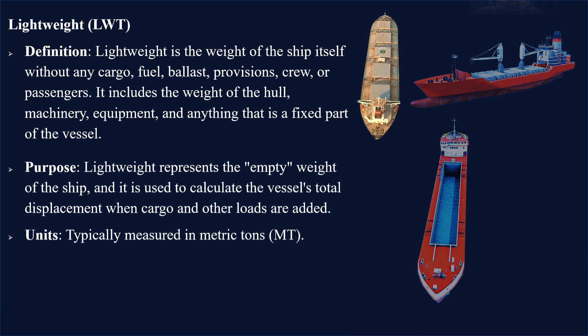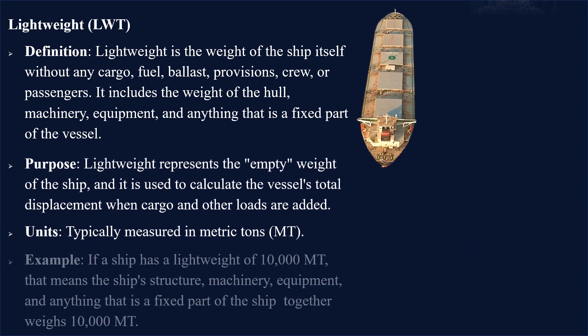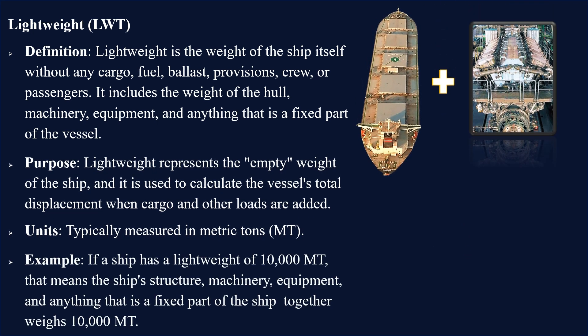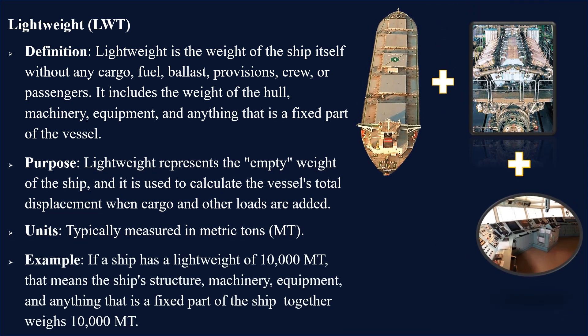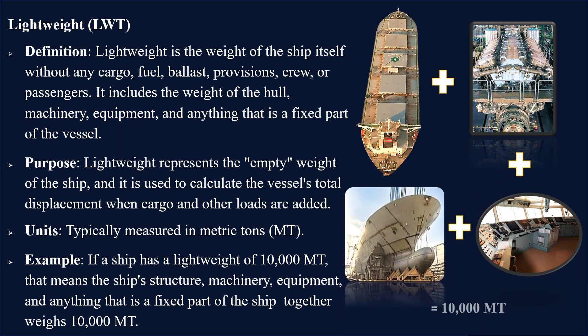For example, if a ship has a lightweight of 10,000 metric tons, that means the ship's structure, machinery, equipment, and anything that is a fixed part of the ship weighs 10,000 metric tons.